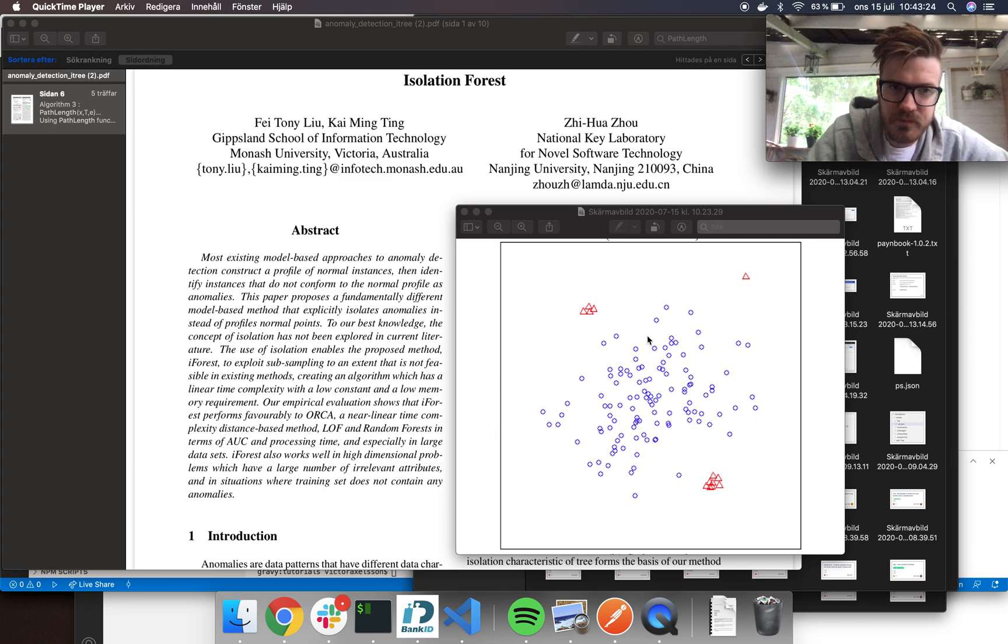So the way this algorithm solves this problem is by taking a bunch of samples from the dataset. You won't use the entire dataset to begin with, you would use randomly sampled items in the dataset that have the same statistical significance as the original dataset. We're going to get more into that later, but let's assume this is a sample that we have here.